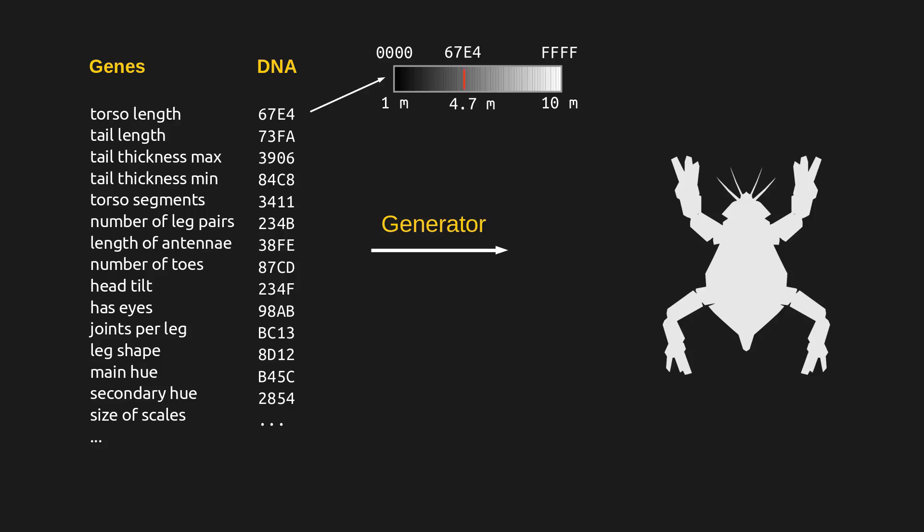However, I also want genes to be able to influence each other, so for some of the genes the range depends on the chosen values of other genes. I can use this to let the torso length influence the maximum possible tail length, or to make sure that the final creature doesn't look like a colorful disco ball.